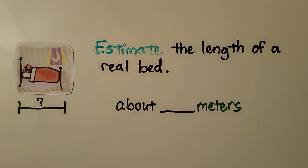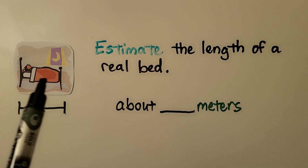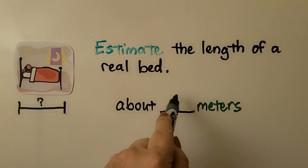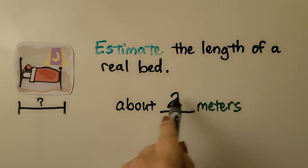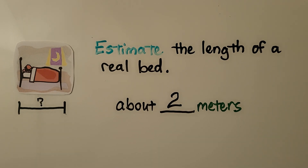Estimate the length of a real bed. How long do you think a real bed is from where you put your pillow way down to the bottom? Do you think it's 1 meter, 2 meters, or 3 meters? If you said about 2 meters, you're right. We could put about 2 meter sticks, and that would be about the length of a real bed.